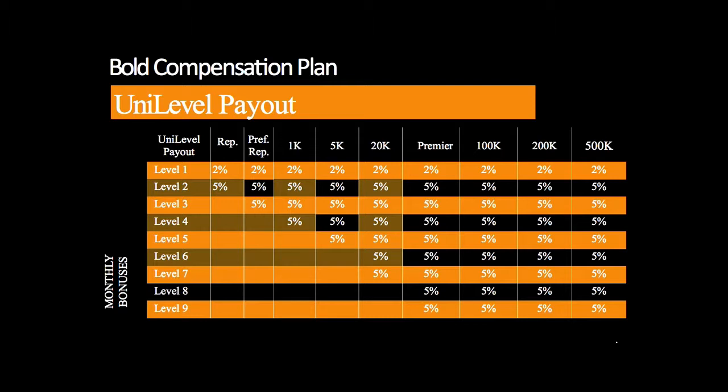When I bring in a new distributor, I get a 25% power start bonus paid next week. So if somebody brings a guest to our home meeting, they sign up and buy a product, that distributor is going to get a check the following week. Then every order they place is paid out in the unilevel. If everybody just did 100 points — equal to about $100 US — you're going to get paid 2% on your own referrals forever.